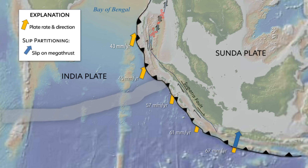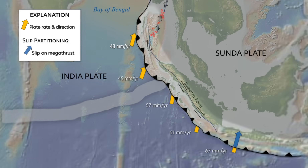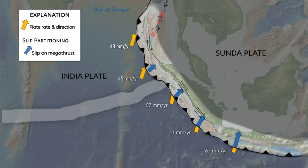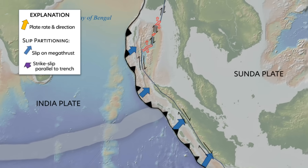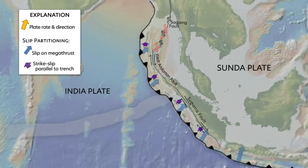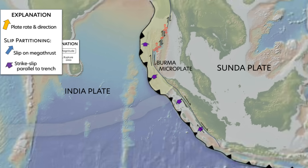This results in slip partitioning, where relative plate motion is divided into two parts. On the megathrust, slip is nearly perpendicular to the trench. Trench-parallel motion of the Sumatra and Andaman forearc slivers is accommodated by strike-slip on the Sumatra, West Andaman, and Saugang faults. The Andaman forearc sliver is recognized as the Burma microplate.